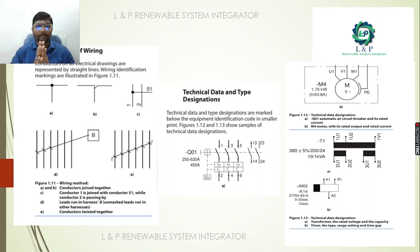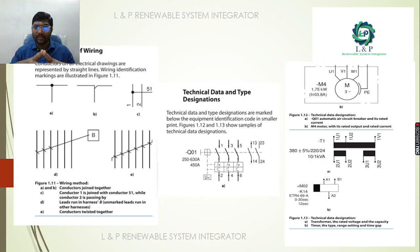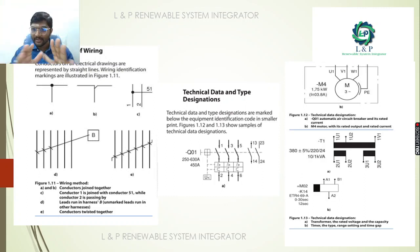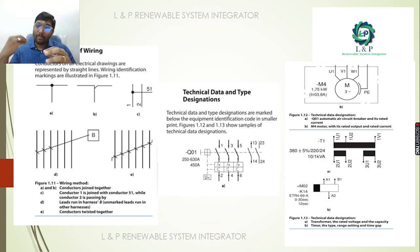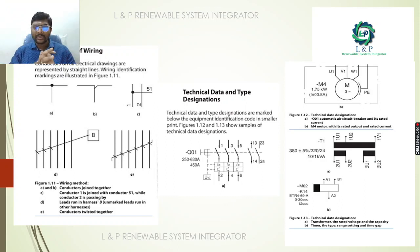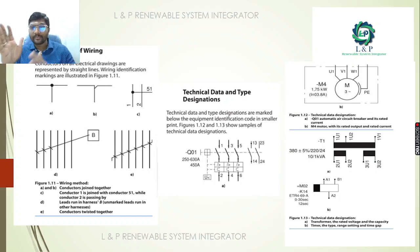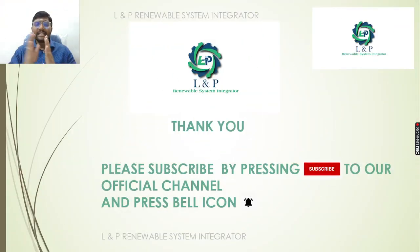Next is technical data and type designation, which is very important. We have shown some samples here. If you are representing any equipment, we need to mention it clearly. For example, for motors this is how we need to represent the technical data identification. There are many ways to represent technical data identification, but only these three methods need to be followed.